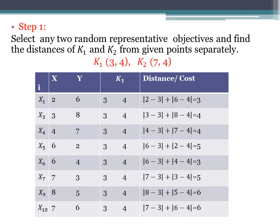First you have to understand one thing: in step one you will select any two random representative medoids from the given data. Similarly in our previous algorithm, K-means clustering, you selected two means based on the value of k equal to 2. Similarly in this case we have taken the value of k equal to 2, but in this scenario we have to select the medoids as compared to the mean. We have 10 number of samples in the given dataset.